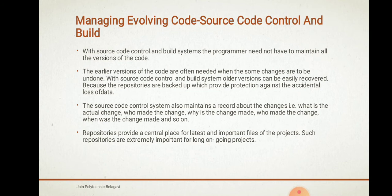Let us go through the first topic: managing evolving code, that is source code control and build. With a source code control and build system, programmers need not have to maintain all versions of code. The earlier versions of code are often needed when some changes are to be undone, and older versions can be easily recorded.